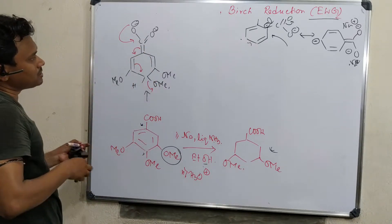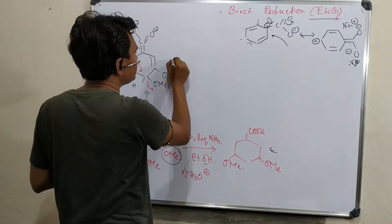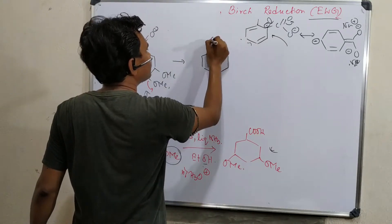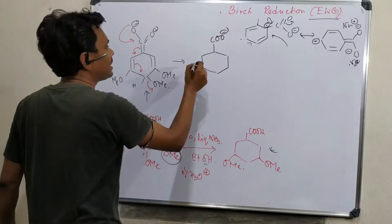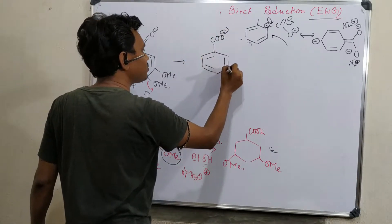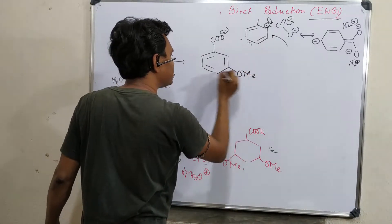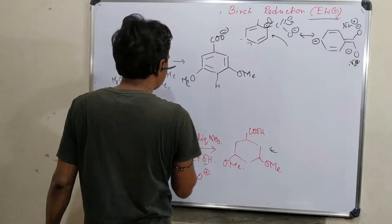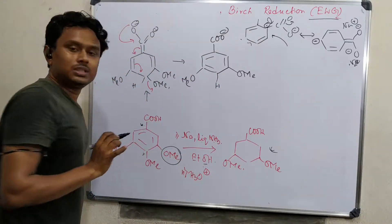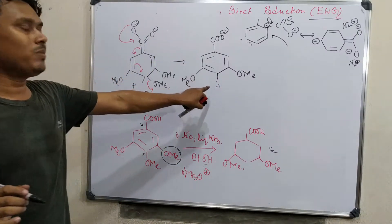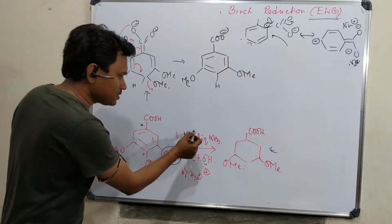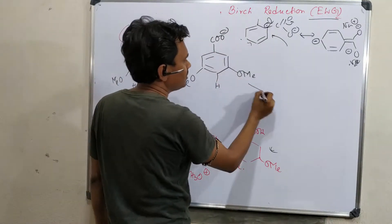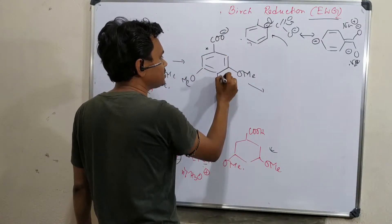After the OMe leaving group departs, ultimately what is produced — after this OMe leaving — a product is formed. This is then subjected to sodium in liquid ammonia conditions, and this is essentially a benzene derivative. It will follow the same track with ipso versus para reduction.